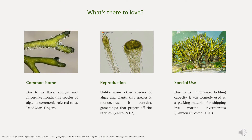What's there to love about this alga? There are three main reasons. Number one, due to its unique common name — because of its thick, spongy, and finger-like fronds, it is commonly referred to as dead man's fingers. Number two, due to its reproduction style — unlike many other species of algae and plants, this species is monoecious, wherein it contains gametangia that project from its utricles. Number three, special use — due to its high water-holding capacity, it was formerly used as a packaging or packing material for shipping live marine invertebrates.